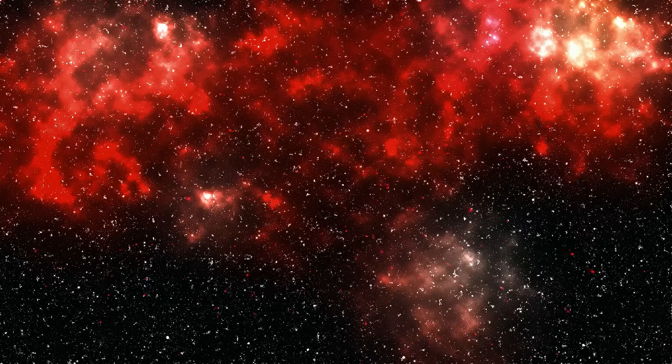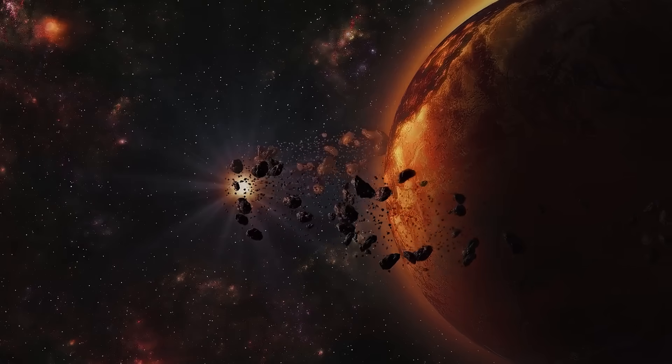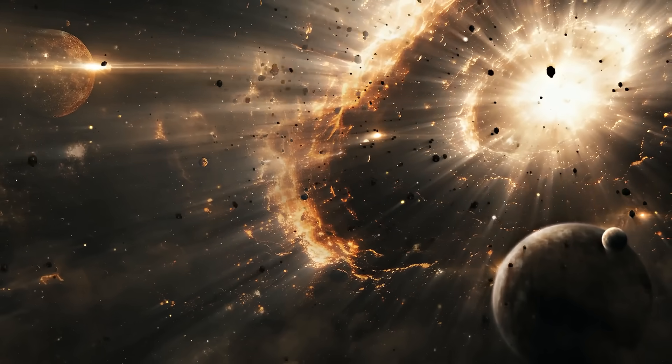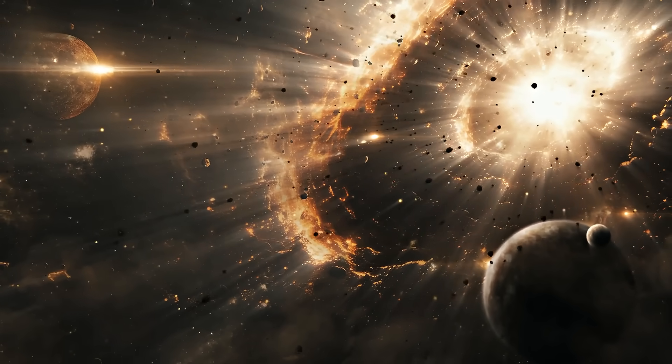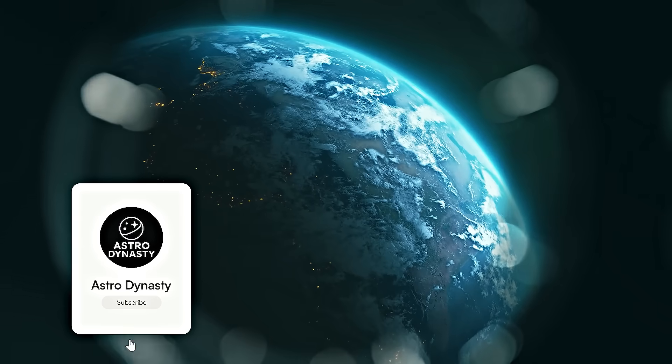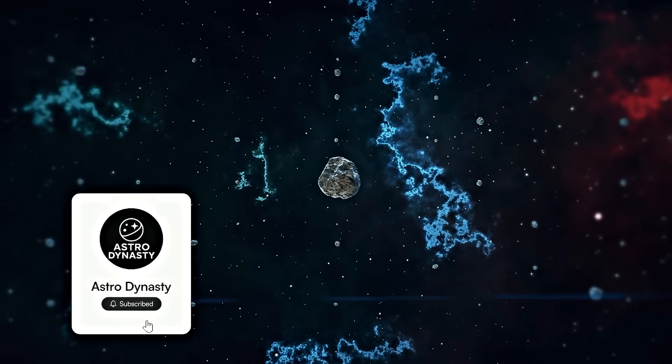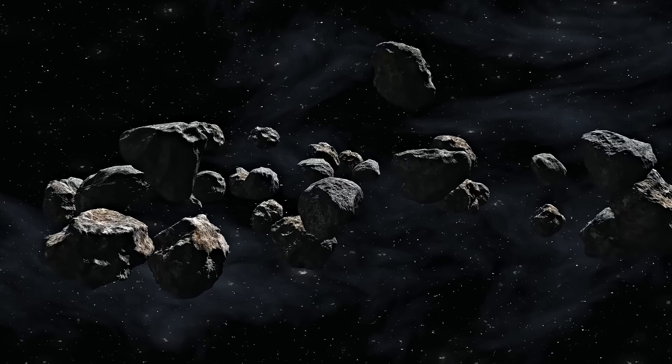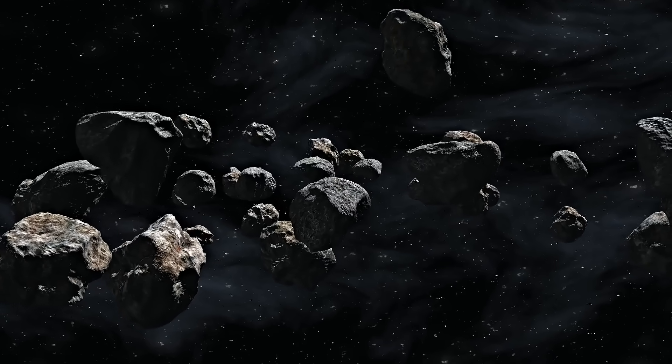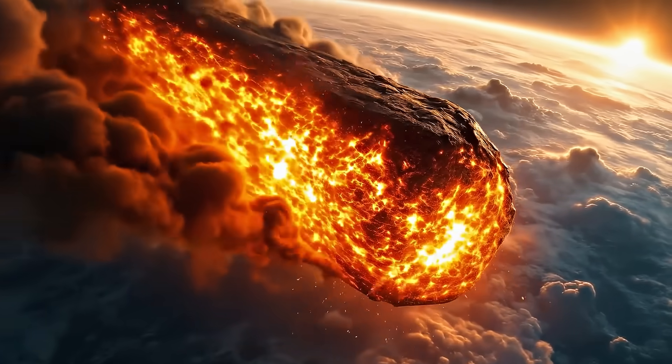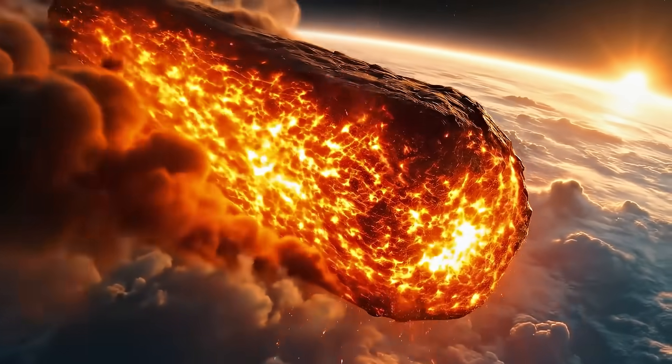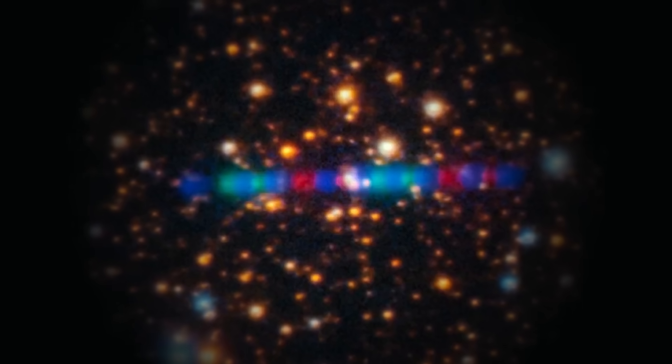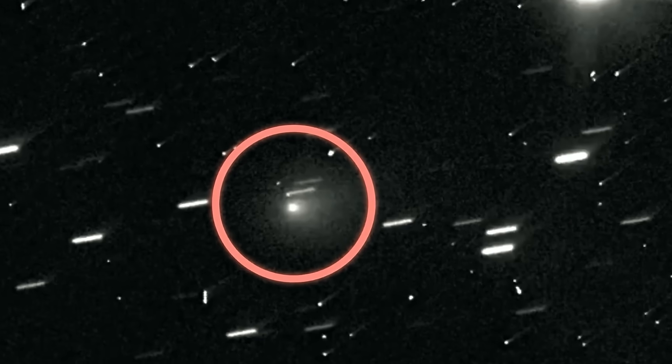NASA, ESA, and observatories around the world are coordinating to capture every second of that moment. If the anomaly persists, scientists will have to rewrite their understanding of interstellar physics. The story doesn't end there. On December 19th, 2025, 3I Atlas will make its closest approach to Earth, about 1.8 astronomical units away. This will give telescopes worldwide their best view yet and a chance for amateur astronomers to join the effort.